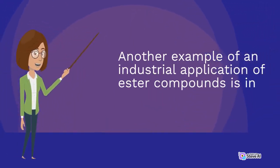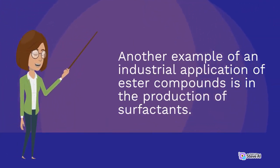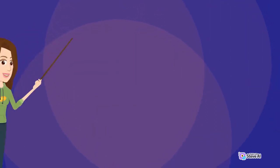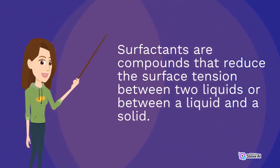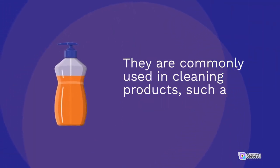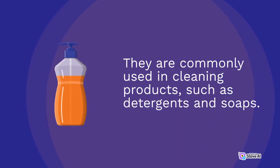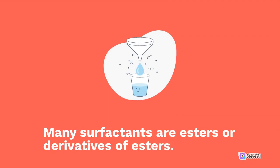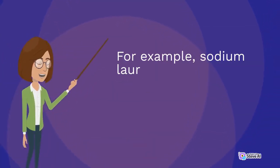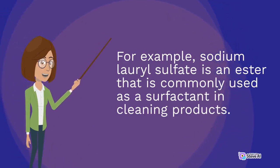Another example of an industrial application of ester compounds is in the production of surfactants. Surfactants are compounds that reduce the surface tension between two liquids or between a liquid and a solid. They are commonly used in cleaning products, such as detergents and soaps. Many surfactants are esters or derivatives of esters. For example, sodium lauryl sulfate is an ester that is commonly used as a surfactant in cleaning products.